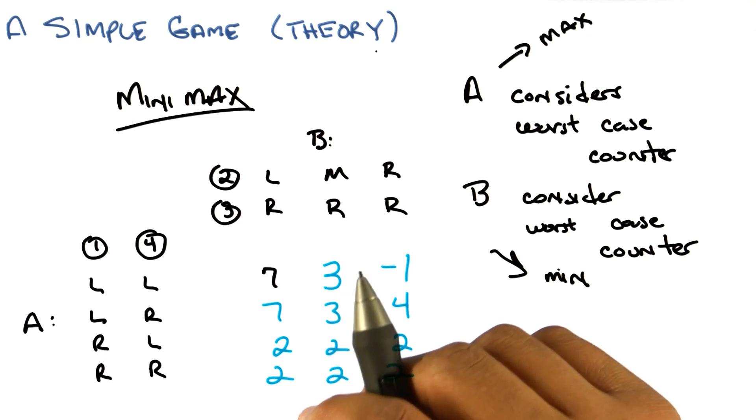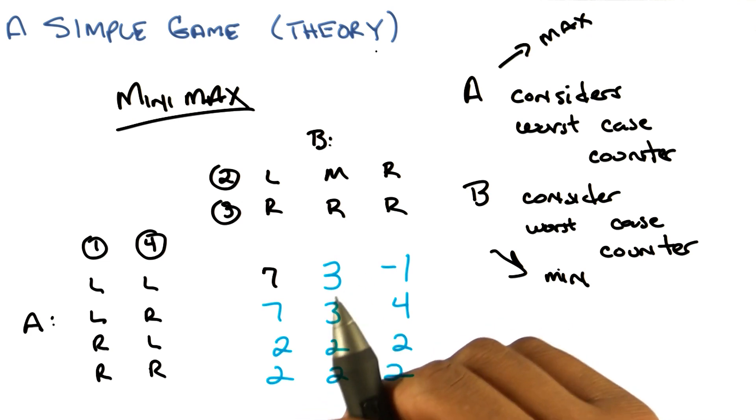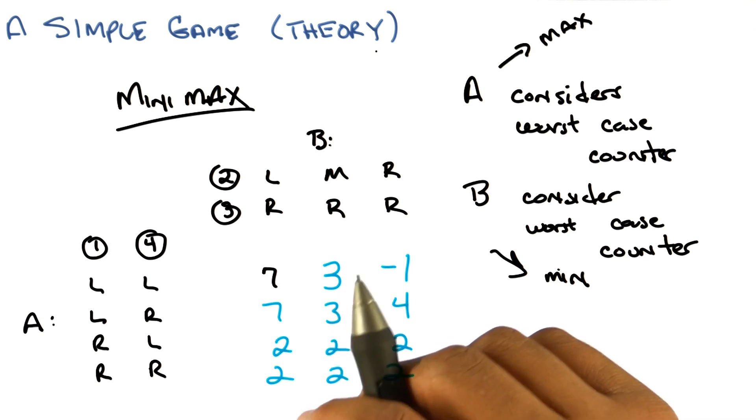So is there a way to do alpha-beta pruning on this? All alpha-beta pruning does is give you a more efficient way of finding the answer. I see, but it's the same answer no matter how you set it up. Right. Cool. That's right.